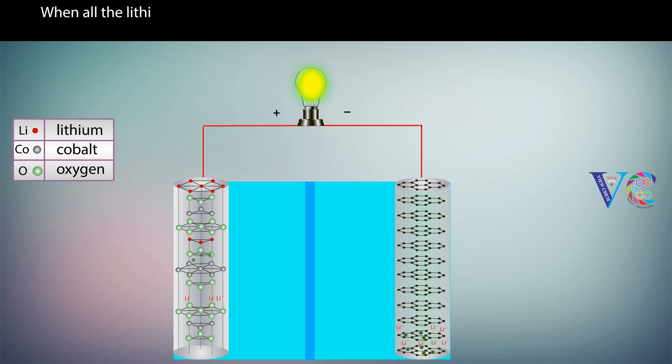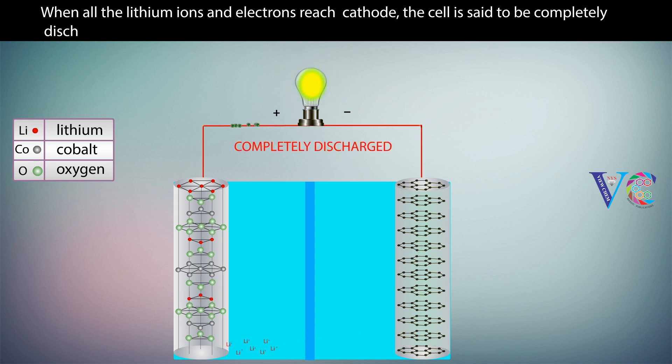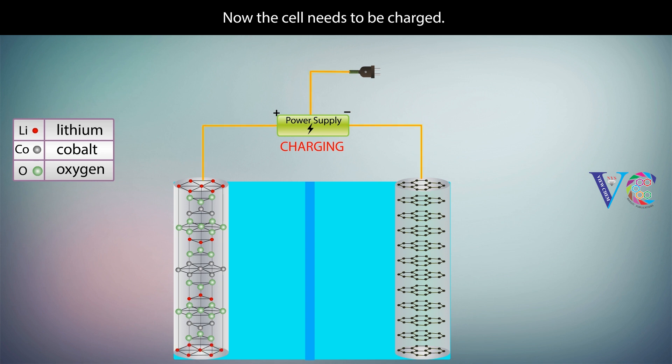When all the lithium ions and electrons reach cathode, the cell is said to be completely discharged. Now the cell needs to be charged.